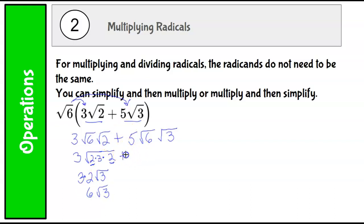Same thing over here. 6 is still 2 times 3. And then we have this other 3 over here that we're allowed to multiply in. But this time we have a 3 that we can pull out. The square root of 3 times 3 is 3. 5 times 3 is 15. Square root of 2. And then that's all we can do on that one. We can't add them together because they don't have the same radical.